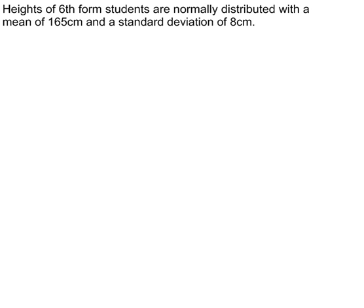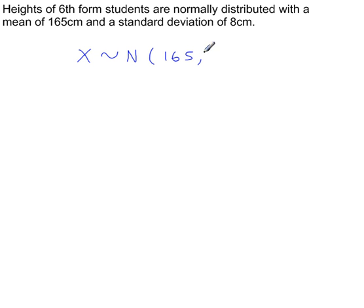Heights of sixth form students are normally distributed with a mean of 165 centimetres and a standard deviation of 8 centimetres. So the random variable x represents the height of a student, normally distributed with a population mean of 165 and a standard deviation of 8 centimetres, which means a variance of 64, or 8 squared.